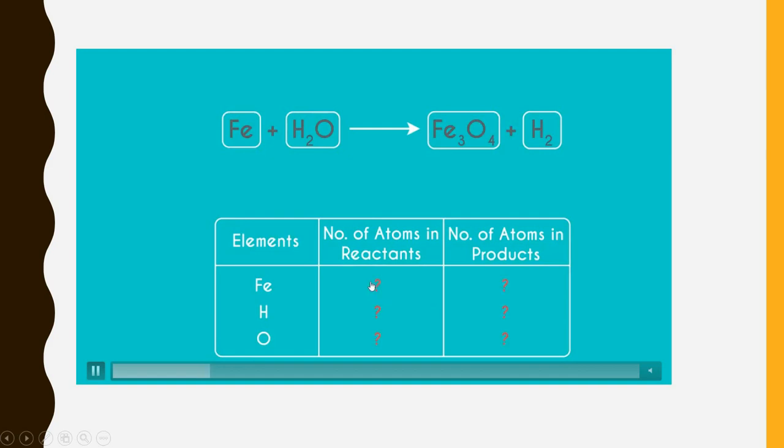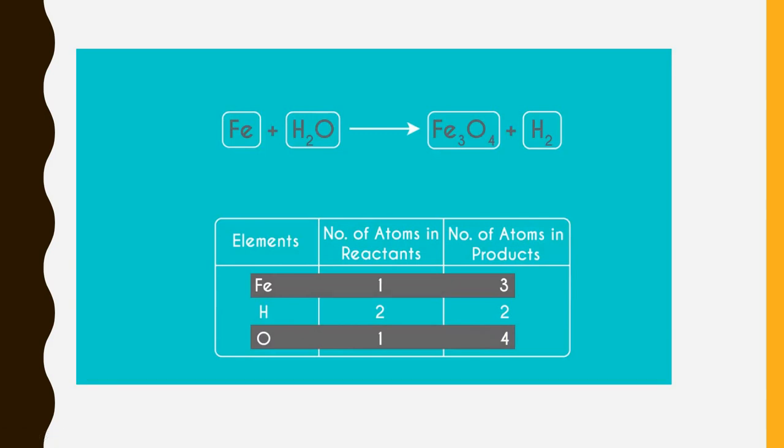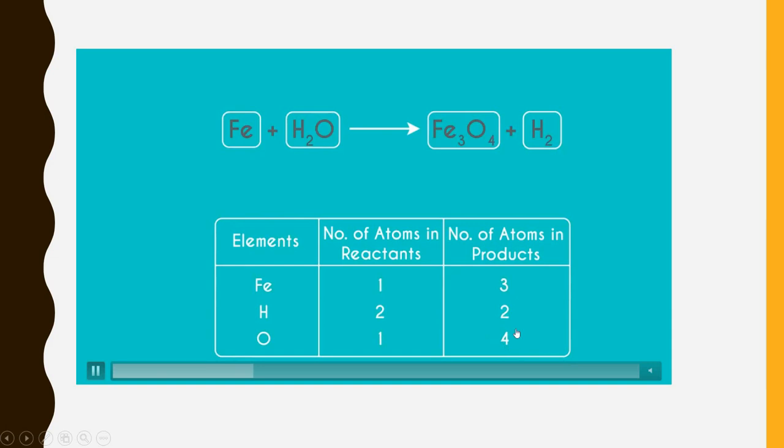Iron will be 1, whereas this side it will be 3, hydrogen 2, this side it will be 2, oxygen it will be 1 and this side 4. Now iron and oxygen are not balanced. So which one should be balanced first? Iron or oxygen? Now you see that the number of atoms of oxygen are more as compared to iron. So first we are going to balance oxygen.